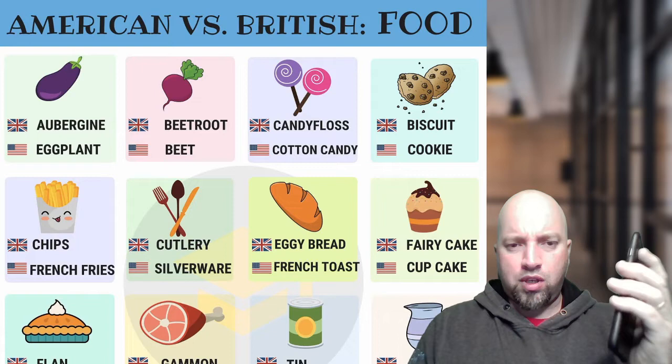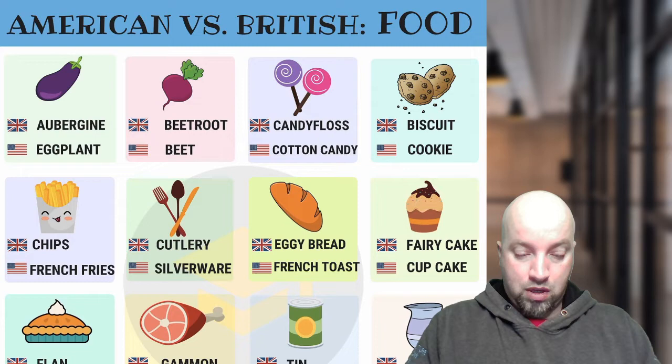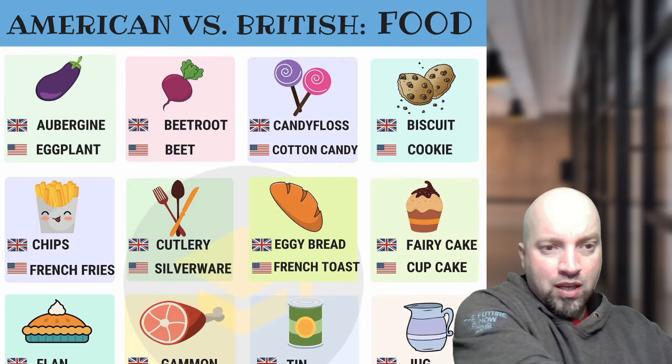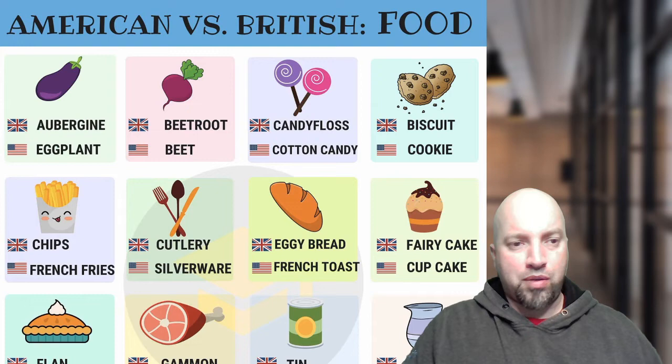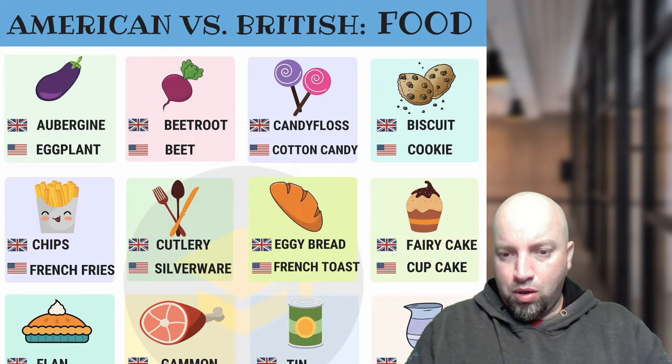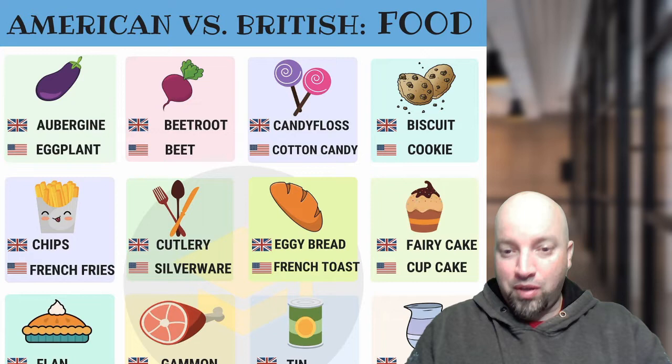Aubergine — never heard that word before. So obviously Canadians say it like the Americans do and we say 'eggplant.' Next one is 'beetroot' and 'beet' — we would follow along with the Americans and say 'beet.' Someone says aubergine is just stolen from the French — maybe. Next one: 'candy floss' and 'cotton candy' — we would also say 'cotton candy' in Canada.